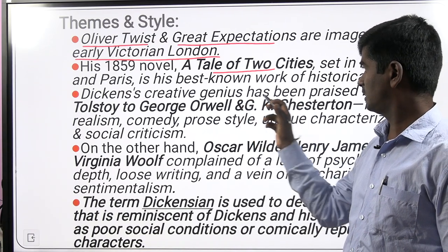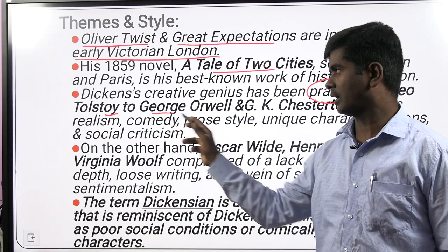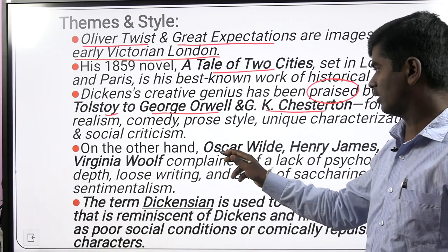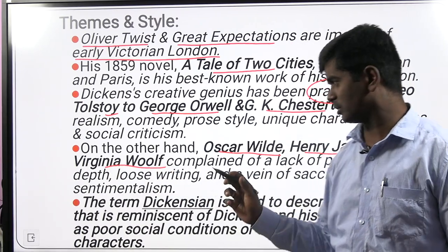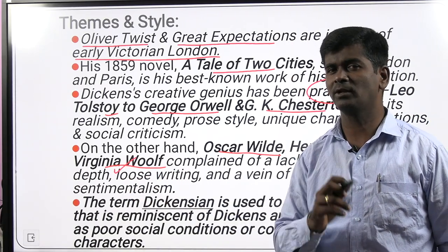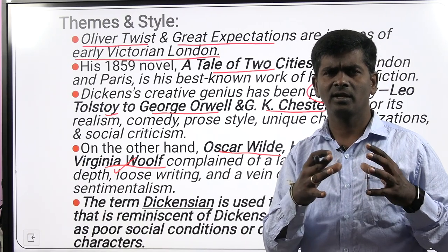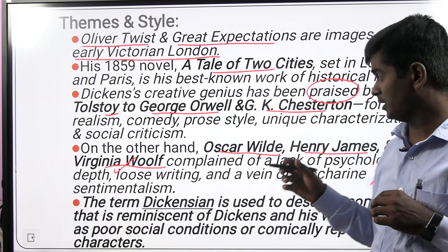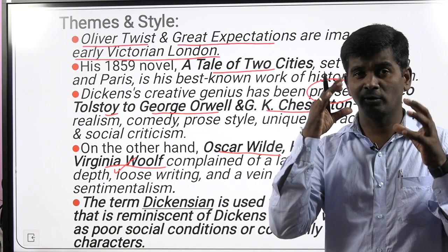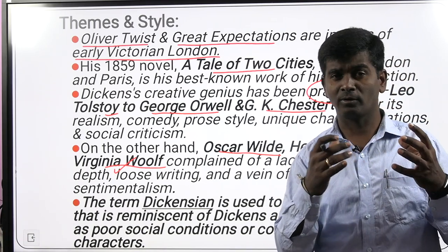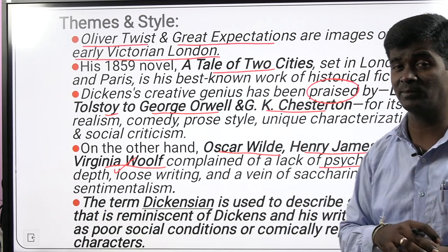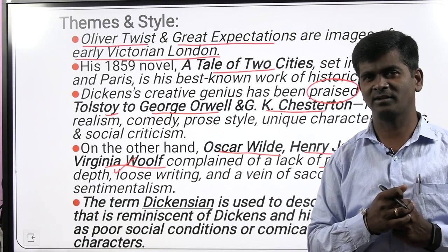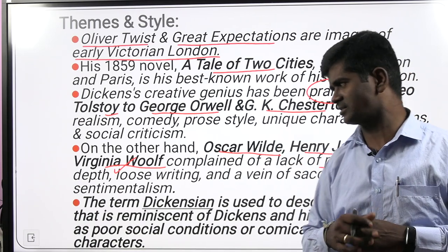His novels were praised by Leo Tolstoy, George Orwell, and G.K. Chesterton, but were ridiculed and criticized by Oscar Wilde, Henry James, and Virginia Woolf — for three important reasons. First, his novels have loose writing, because composing in serial form meant there was no integrity across every chapter. Second, his novels lack psychological depth — after reading the novel, you are not psychologically influenced. Henry James made the statement that his novels are 'loose baggy monsters.'